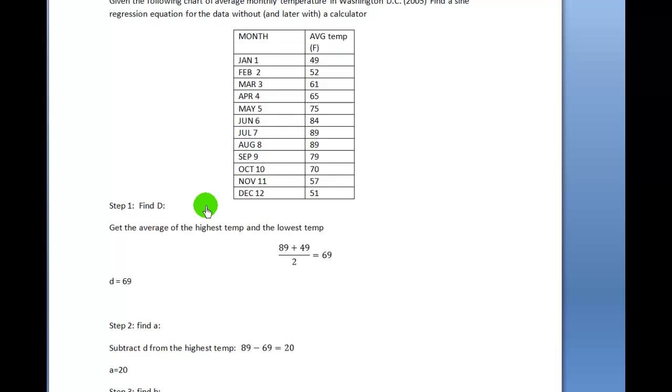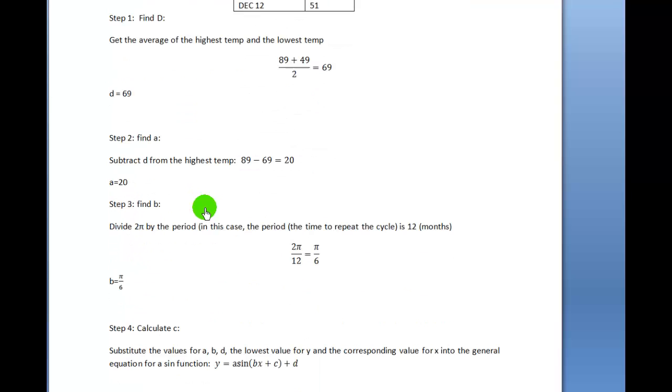Step 2 is you're going to find a. We're going to subtract D from the highest temperature. Since D is 69 and the highest temperature was 89, 89 minus 69 is 20. That's the amplitude above and below the center line.